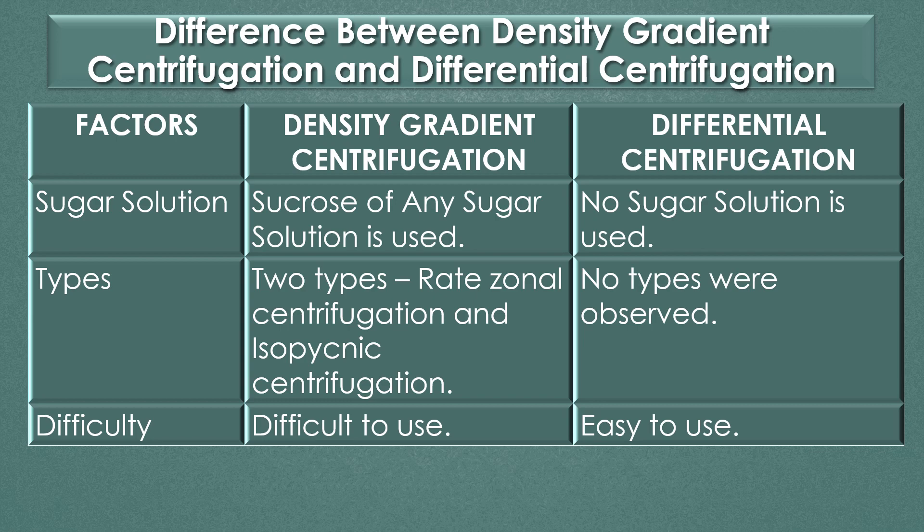Types: Two types of density gradient centrifugation are rate-zonal centrifugation and isopycnic centrifugation. No types were observed in differential centrifugation. Difficulty: Density gradient centrifugation is difficult to use, but differential centrifugation is easy to use.